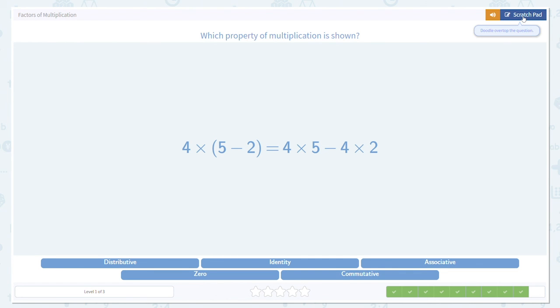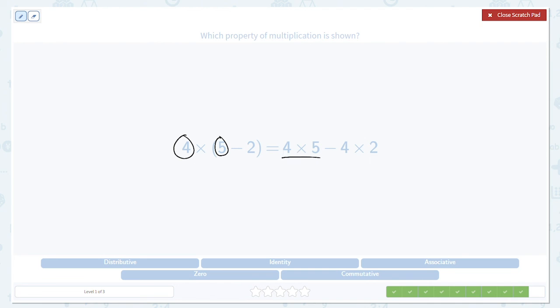One last example of the distributive property. We take the 4 and we distribute it. 4 times 5, that gives us this term. Then 4 times 2 gives us that term. Because the 5 and the 2 are joined with a minus, we use a minus on the right as well. That's the distributive property.